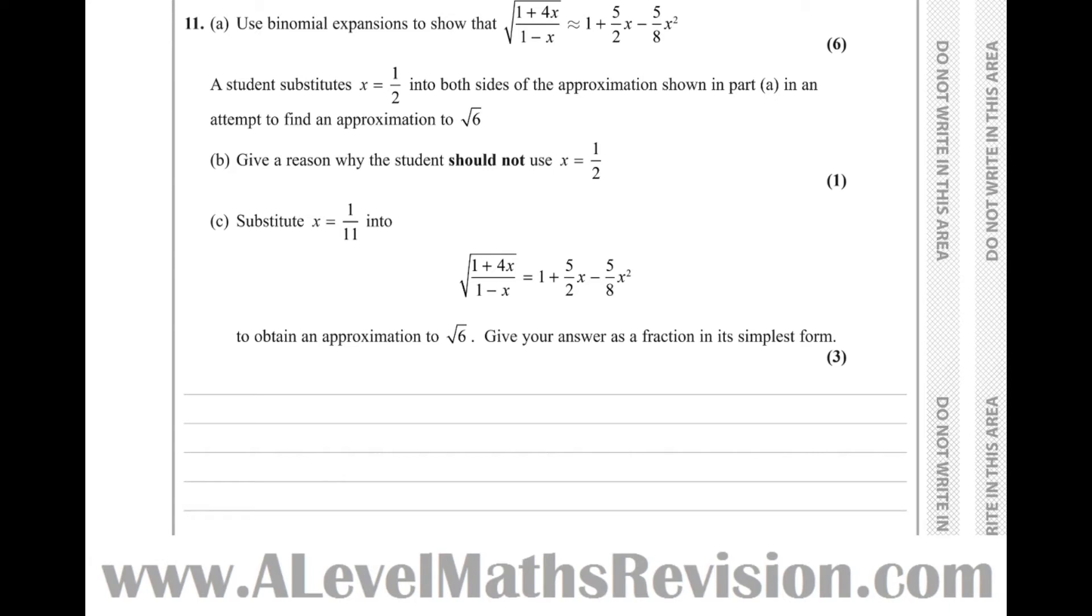Right, question 11, which is on the binomial expansion. It says use the binomial expansion to show that the square root of 1 plus 4x over 1 minus x is approximately equal to that. So there we can see we've got a product of two different binomial expansions. It looks like a fraction,